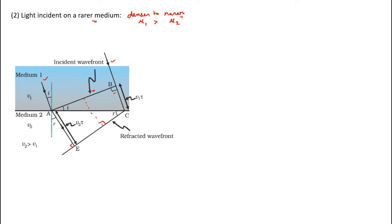By the time B reaches C, A will reach E. If the time is tau, then the distance BC is V1 times tau — velocity into time is distance. AE will be V2 times tau. Now consider triangle ABC: sine i is equal to opposite by hypotenuse, that is BC by AC. Also, sine r — looking at this triangle — sine r is AE by AC.